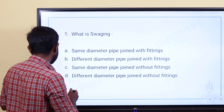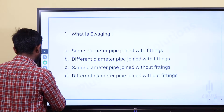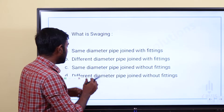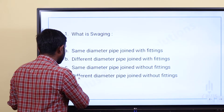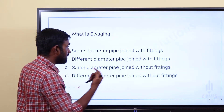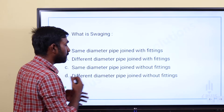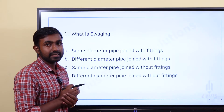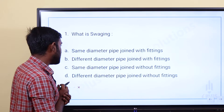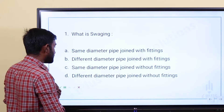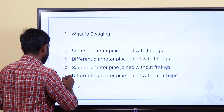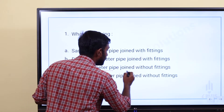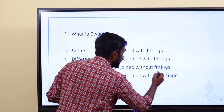If you are saying Swaging — piping and pipe — same diameter pipe, fittings use to join. It is a very different process. So the answer is Option C: same diameter pipe joint without fitting.